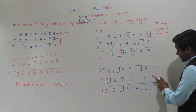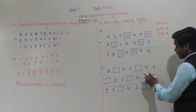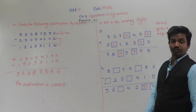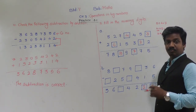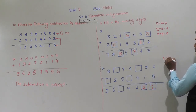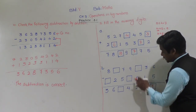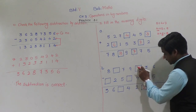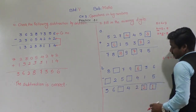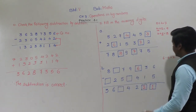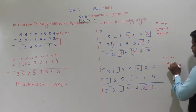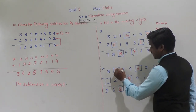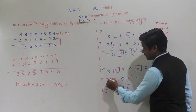Similarly for subtraction: 6 minus 5 equals 1. 3 minus 1 equals 2. Dash minus 4 equals 2 — so 6 minus 4 equals 2, the missing digit is 6. 9 minus dash equals 4 — so 9 minus 5 equals 4, the missing digit is 5. 7 minus 5 equals 2. Dash minus 2 equals 6 — so 8 minus 2 equals 6, the missing digit is 8. 8 minus dash equals 3 — so the missing digit is 5.